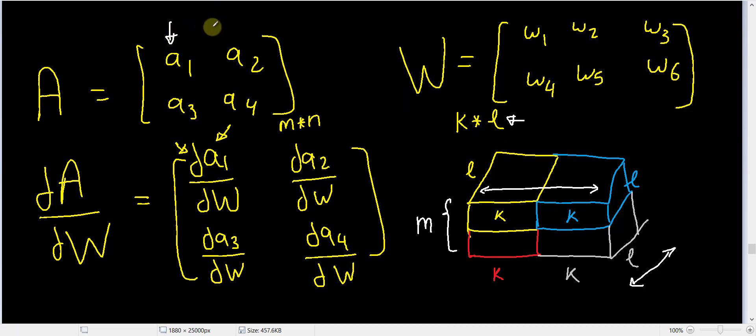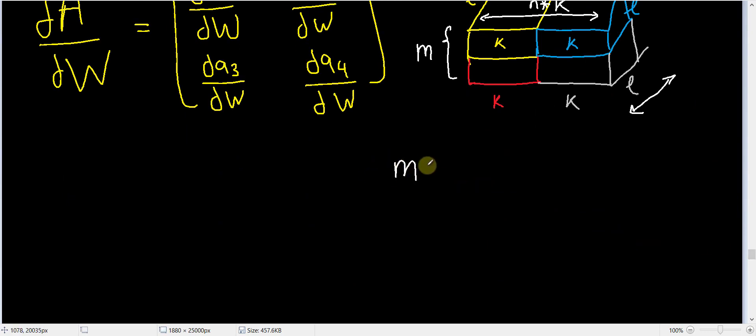And this width right here is equal to K times multiplied by N. Every column of this original matrix will be expanded to K elements right here, so the dimension of this tensor is equal to M multiplied by N by K multiplied by L in the depth dimension.